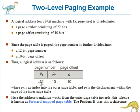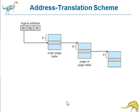Where p1 is an index into the outer page table and p2 is a displacement within the page of the inner page table. The address translation method for this architecture works from the outer page table. This scheme is also known as a forward-mapped page table, and the Pentium architecture uses this architecture. This is the address translation table for the 2-level 32-bit paging architecture. The first p1 represents the page index for the outer page table, and p2 represents the page of the inner page table.